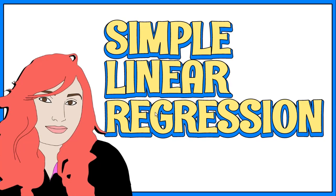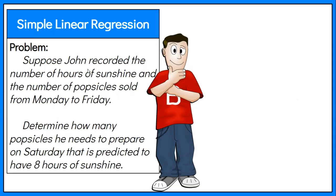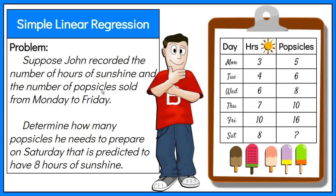Let's have a look at a simple linear regression example. Suppose John recorded the number of hours of sunshine and the number of popsicles sold from Monday to Friday. He learned that 8 hours of sunshine is predicted on Saturday. He would like to know how many popsicles he needs to prepare.